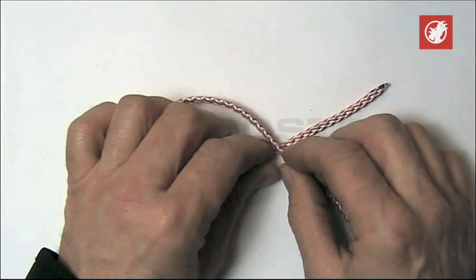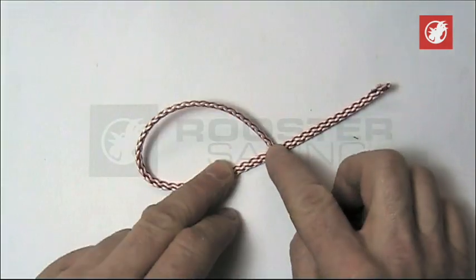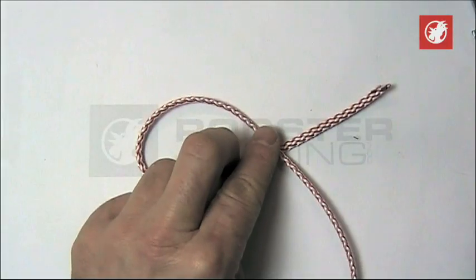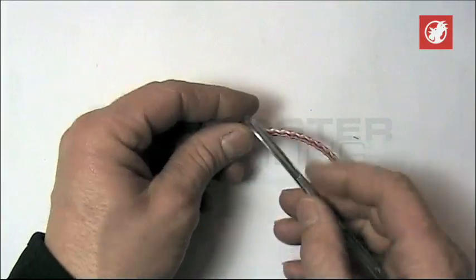Basic loop, basic splice. I want to put a splice in a rope about that size. What I need to do first,